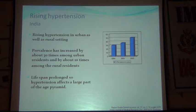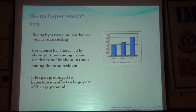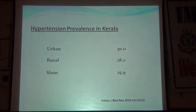In India, the same pattern is seen — there is rising hypertension in urban as well as rural areas. From data by Rajiv Gupta et al., in 1994 prevalence was 30 percent and in 2003 it was 50 percent — a 30-fold increase among urban residents and about 10-fold among rural residents. Hypertension affects a large part of the population across age groups.